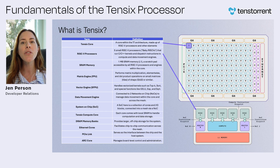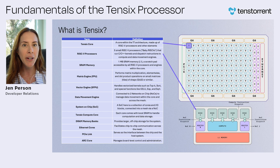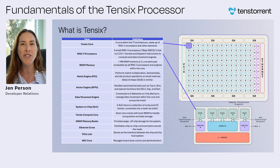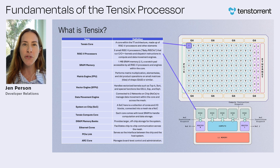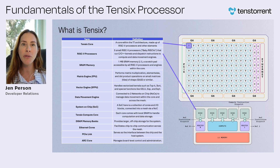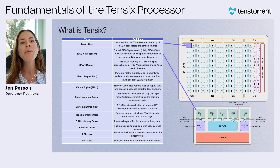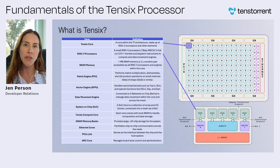Each Tensix core includes 1.5 megabytes of static RAM, or SRAM, scratchpad memory. This might seem small at first glance, but it's designed to handle small tiles, matrices, and vectors efficiently. Tensix drives those computations with two key engines: the matrix engine, responsible for matrix multiplications, element-wise operations, and dot products; and the vector engine, which handles vectorized kernels like top-k, sort, and specialized functions such as GELU, exp, and square root.